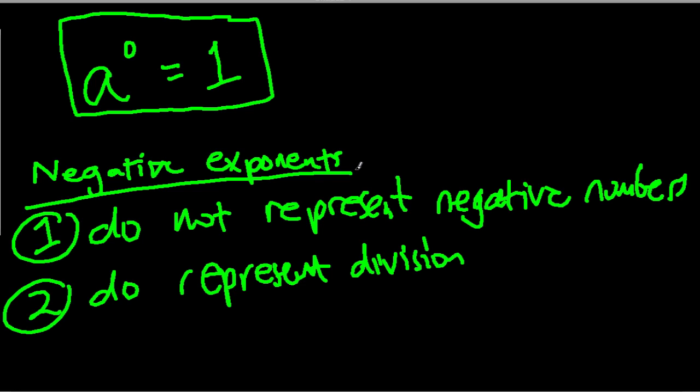On to negative exponents. So what happens when that little number is negative? What does that mean? Well, first of all, it does not mean that we have a negative number. It never means that. And secondly, what it does represent is division.